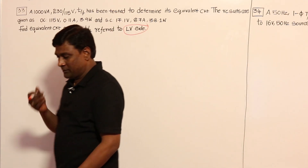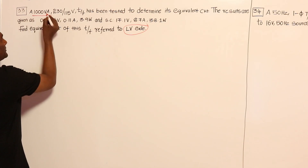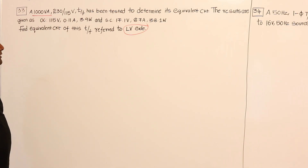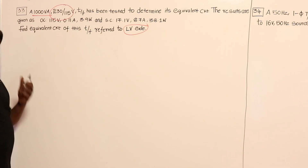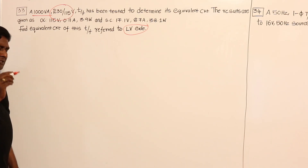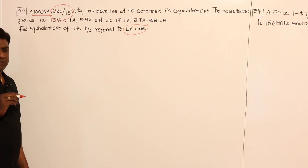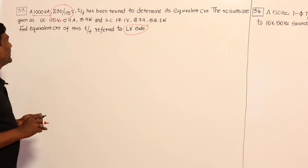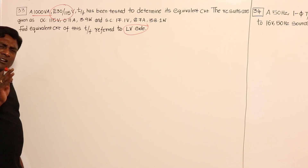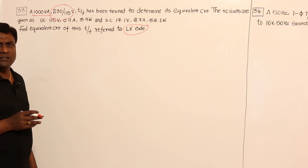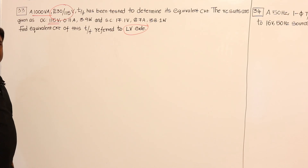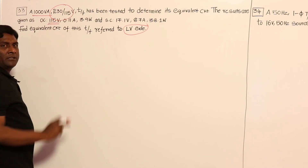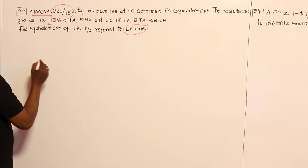The rated capacity of the machine is 1000 VA and the rated voltages are 230/115 V. OC test and SC test data are given. In the OC test, compulsorily the test has to be conducted at rated voltage and rated frequency. OC test is conducted at 115 volts, which means the test is conducted on the LV side.